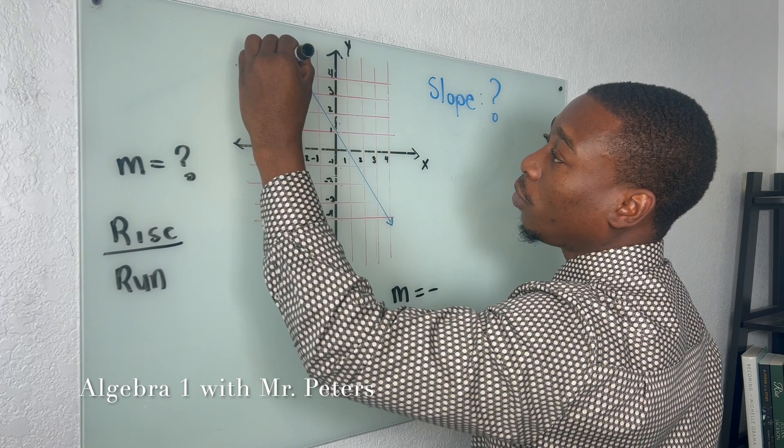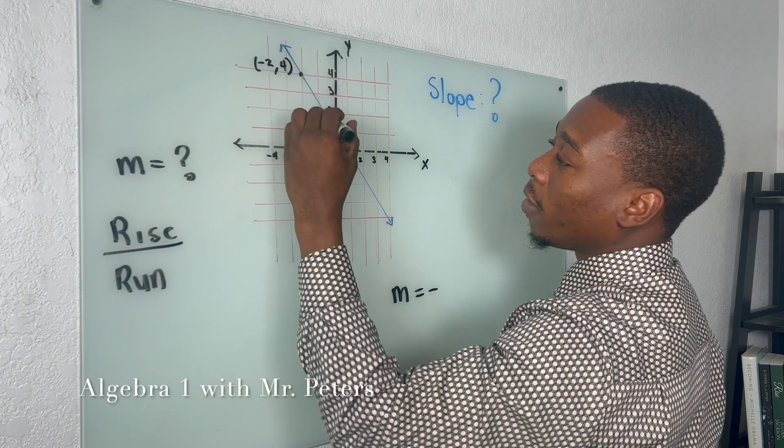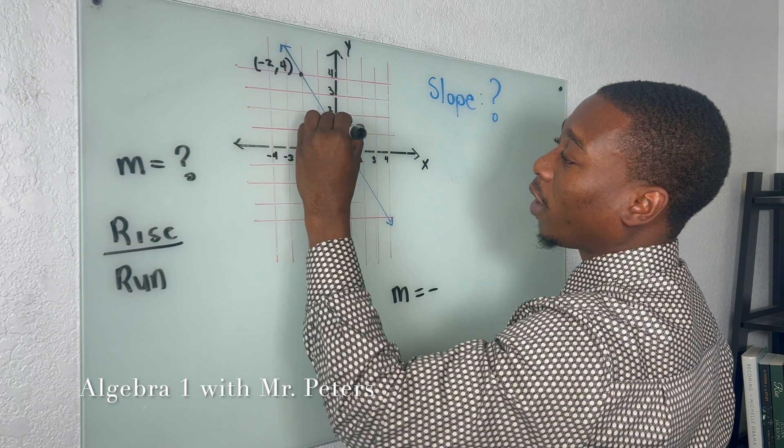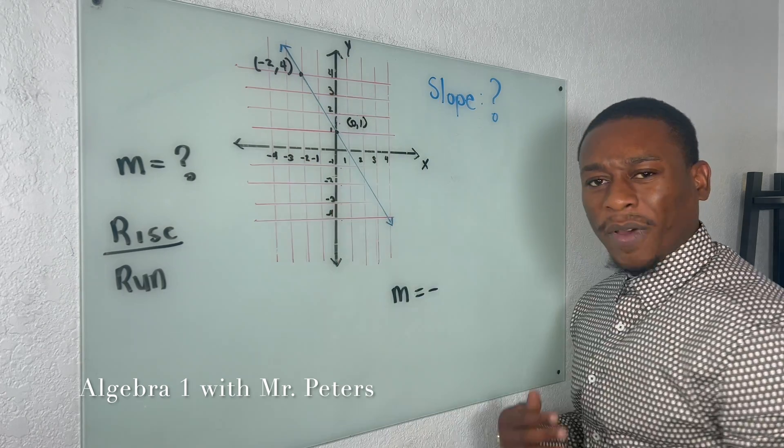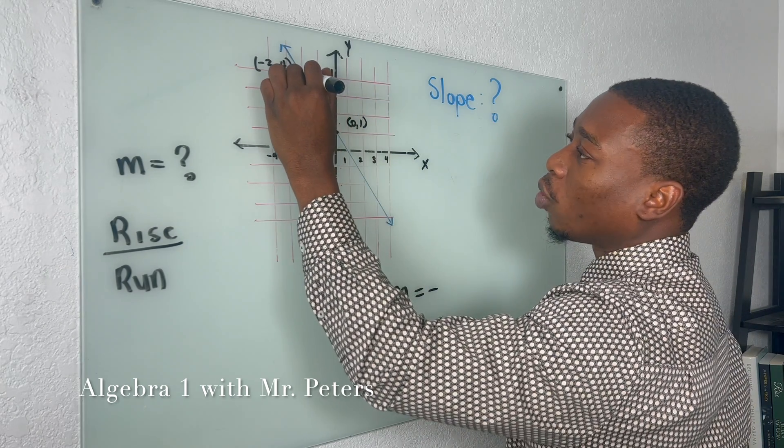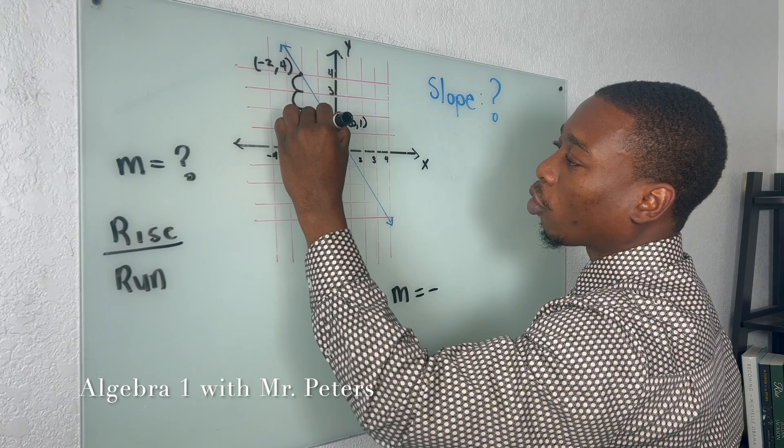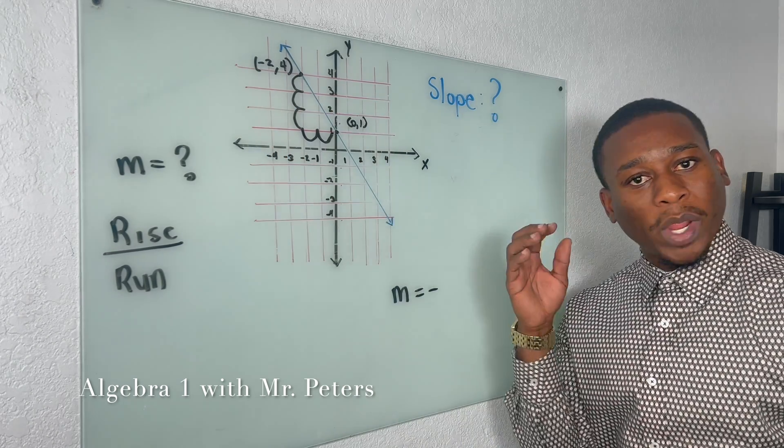This is why it's negative, because of the way the line is slanted. Now when I go here and I pick my exact points, I have one right here which would be (-2, 4), and then I have one right here which would be (0, 1). So if I do my rise over run guys, I'm gonna go down one, two, three, over one, two.